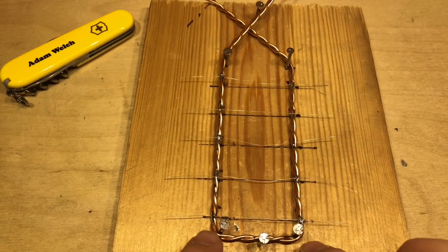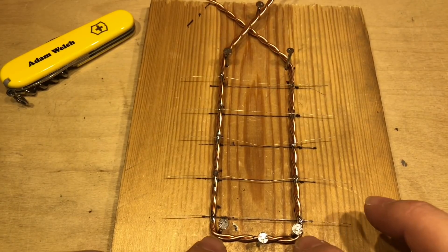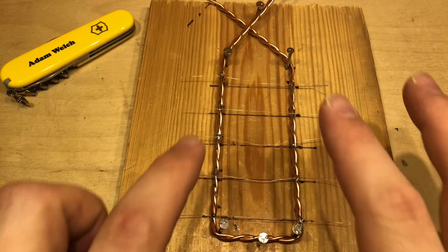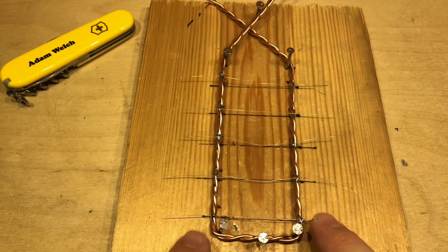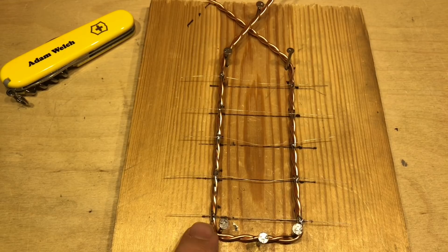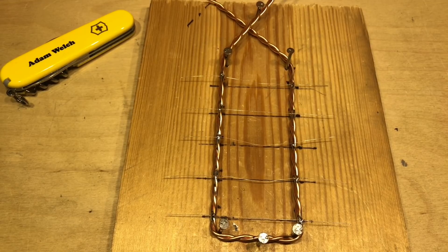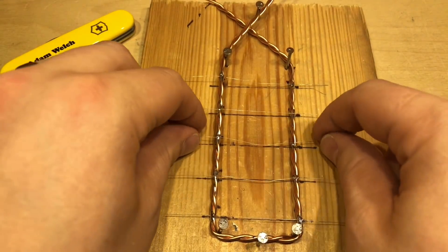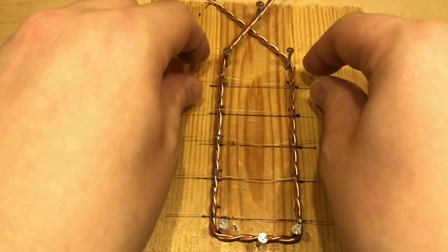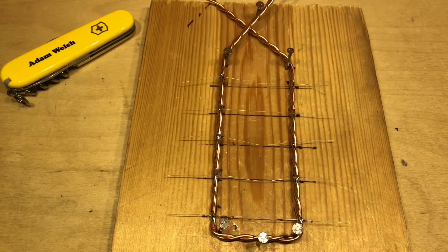So there we have the fuse wire attached to the bus bar. By heating up the bus bar and pre-tinning it beforehand helps make sure that you can get a good electrical connection between the fuse wire and the bus bar. I think they're all pretty good actually so hopefully that's going to work all right.